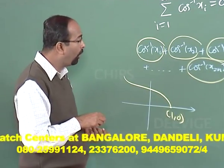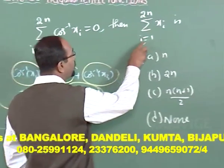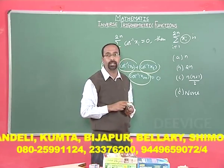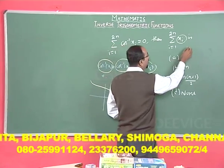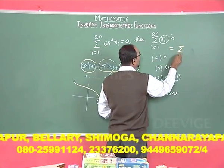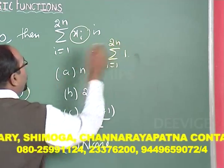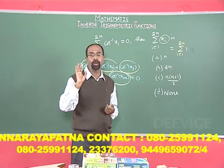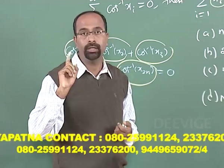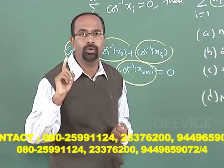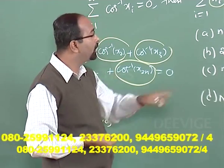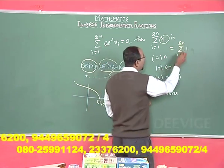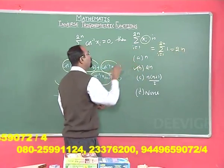Now the question asks for summation i = 1 to 2n of xᵢ. Since every xᵢ = 1, we can replace xᵢ by 1, giving summation i = 1 to 2n of 1, which equals 2n. Therefore Option B is correct.